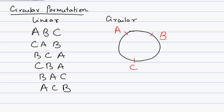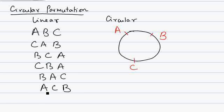Let's see why circular permutation cannot be handled the way linear permutation can. In linear permutation, if you have to order A, B, C, you arrange them in a row such that their relative positions are different. There are six possible orders for ABC in a linear arrangement.